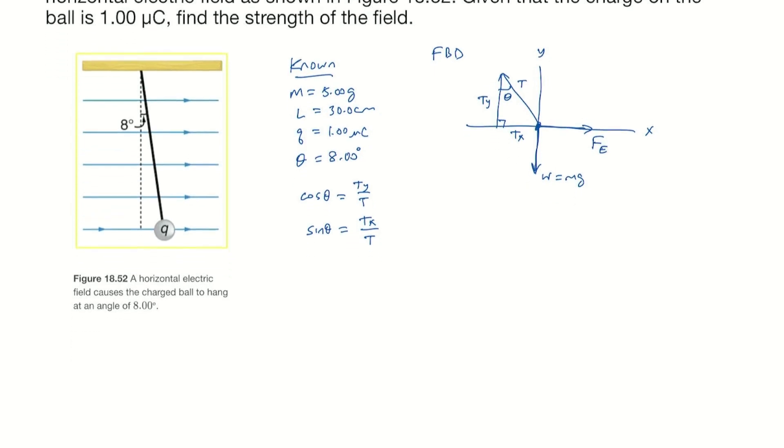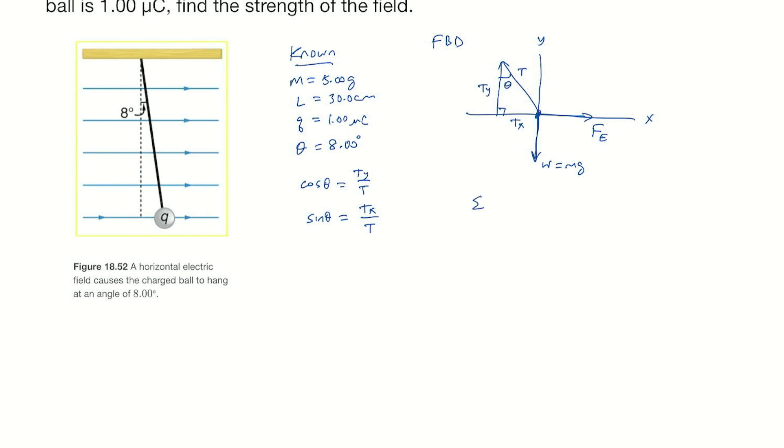Let's sum the forces in the x direction. Note that the ball is not accelerating so we can say the forces will add up to zero. We've got F e in the positive x direction, tx in the minus so we subtract tx. That's it for the x direction.